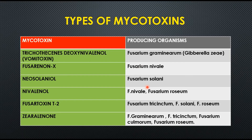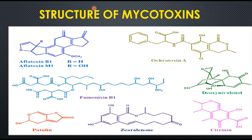The types of mycotoxins will be discussed in detail in Part 2. Here you can see the different structures of various mycotoxins, including aflatoxin, fumonisins (produced by Fusarium species), patulin, zearalenone, citrinin, deoxynivalenol, and ochratoxin A.